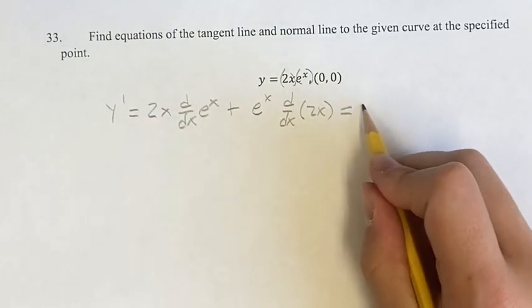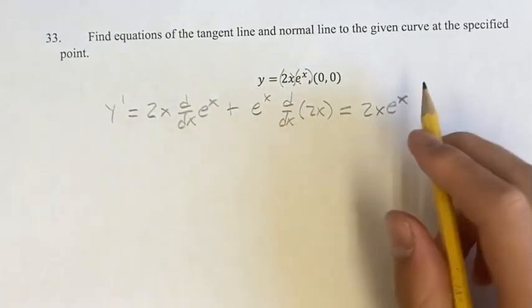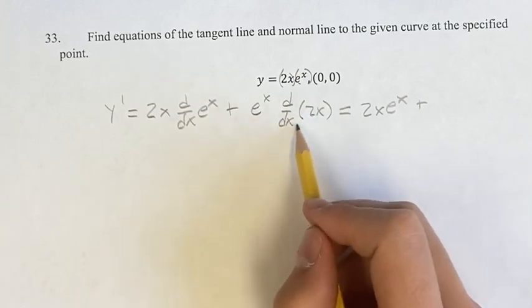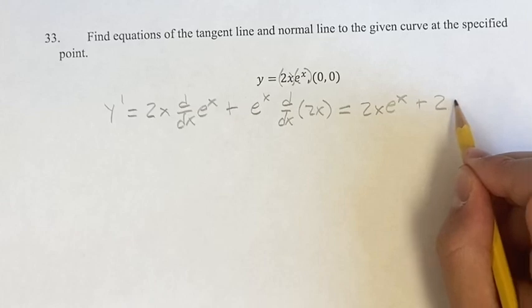And this is going to be equal to 2x, and the derivative of e to the x is just e to the x, plus 2x. The derivative of this, it's a linear term, so its derivative is just its coefficient, which is 2, so it's going to be 2e to the x.